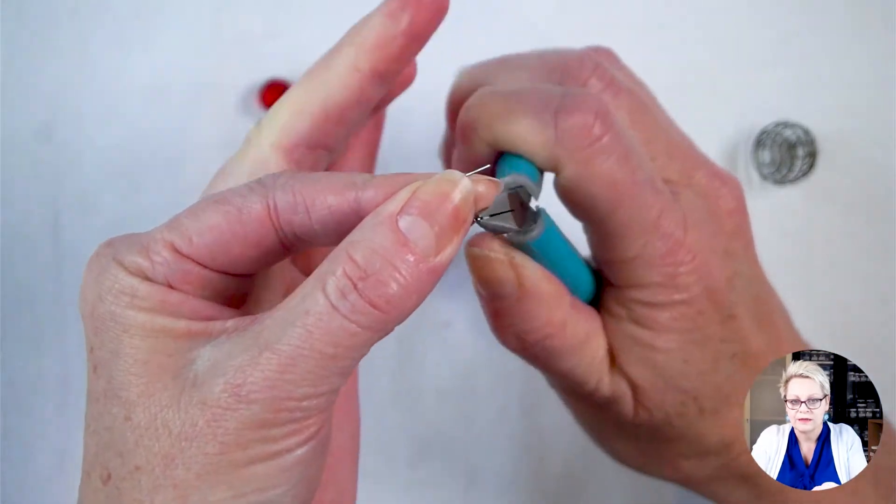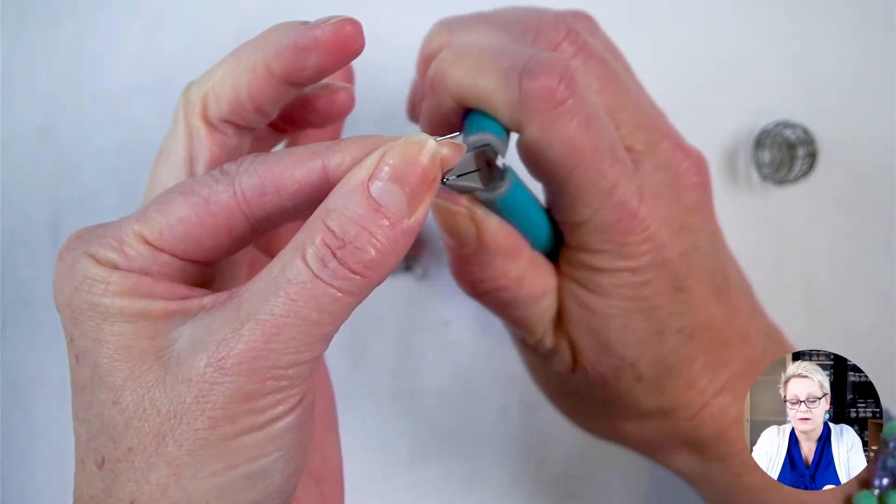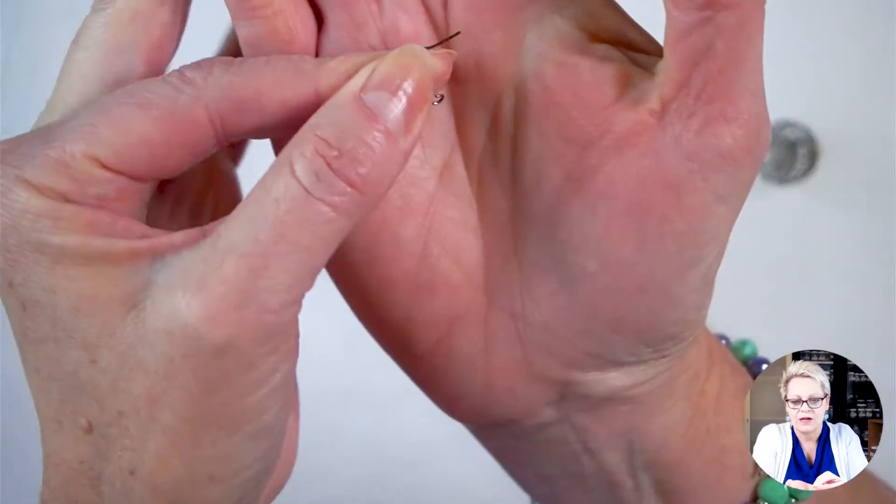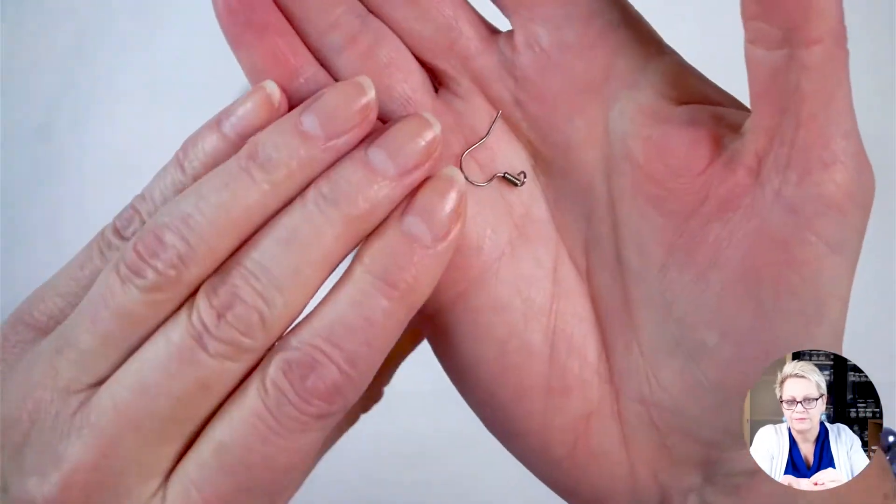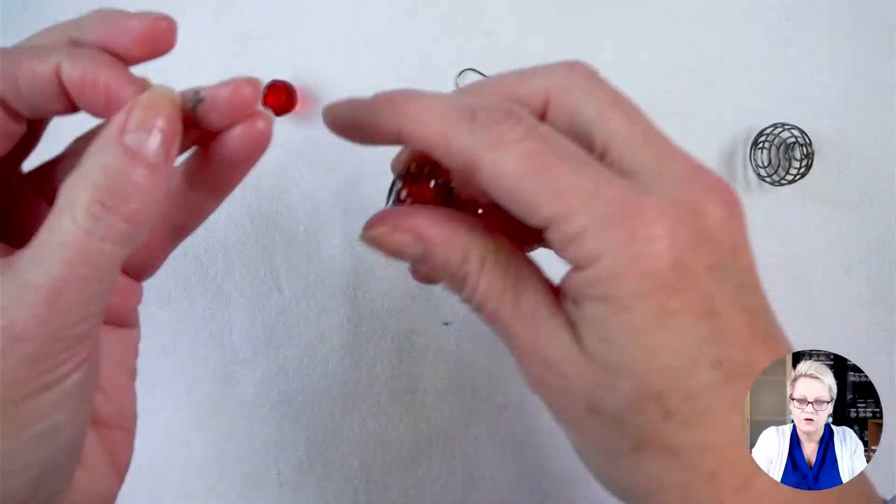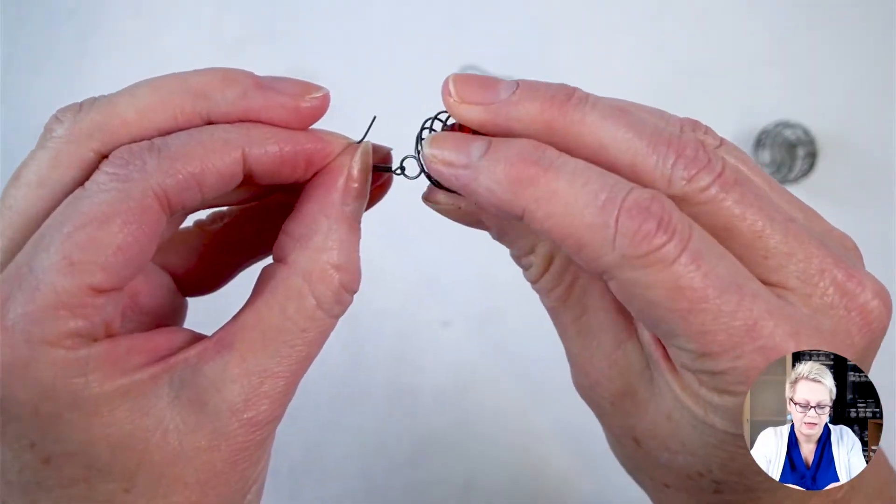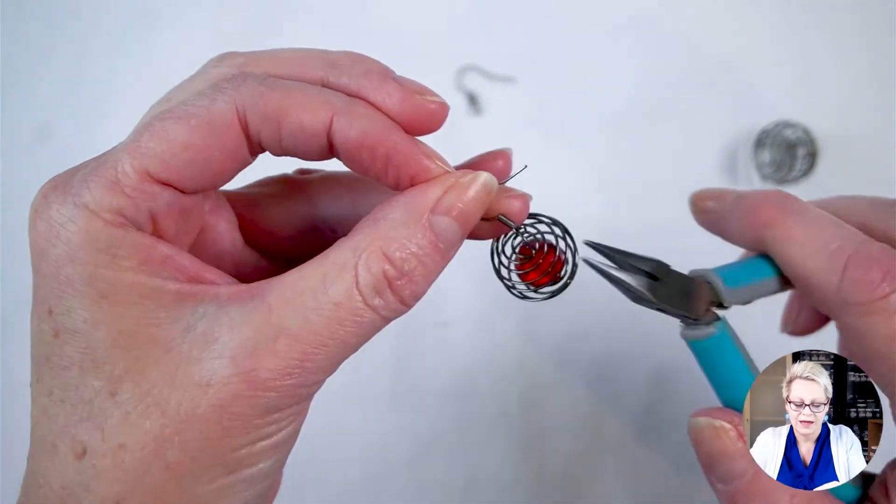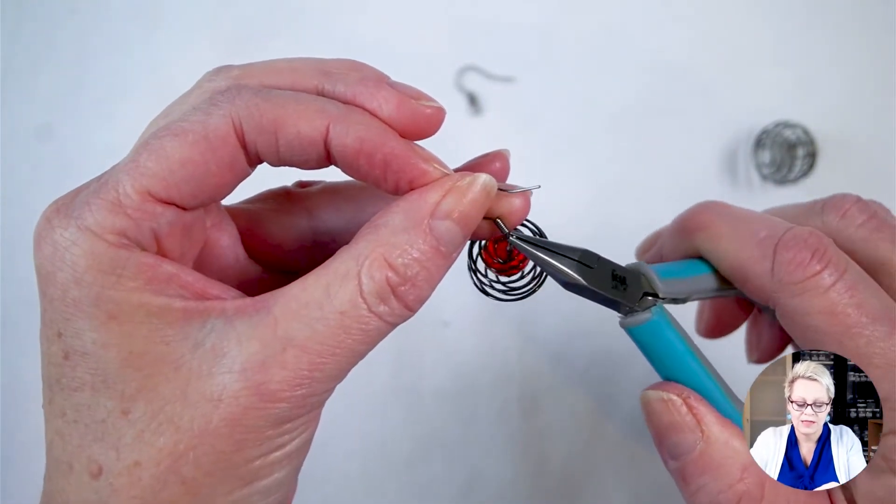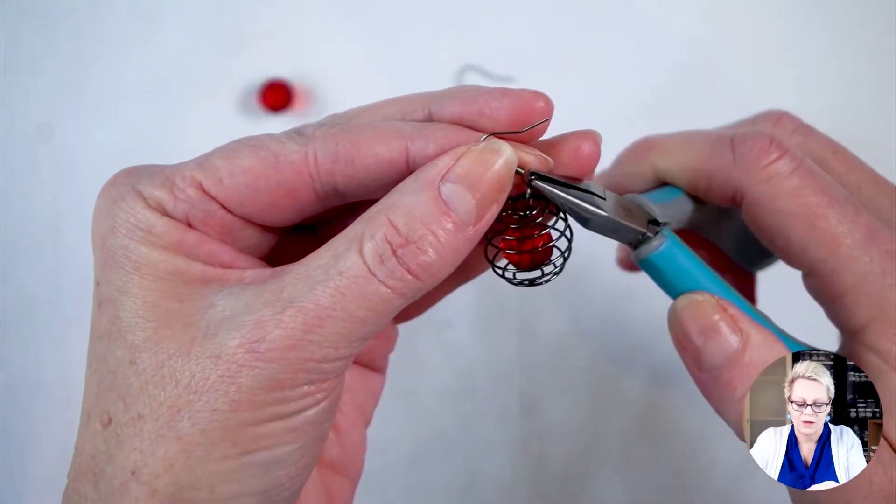And I'm going to twist up with my pliers, or down with my pliers, so that I open the ear wire. Now I'm just going to take the loop of the spring cage bead, pop it on there, and I'm going to basically reverse that process for the ear wire to close the ear wire.